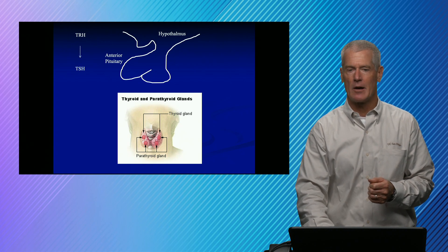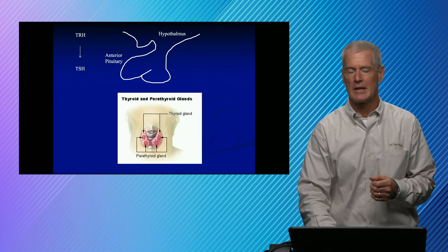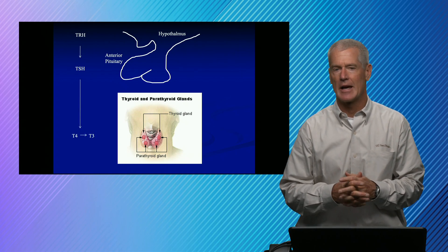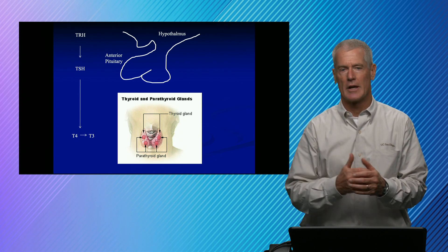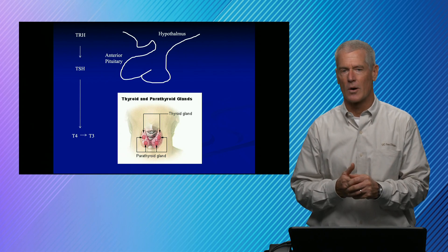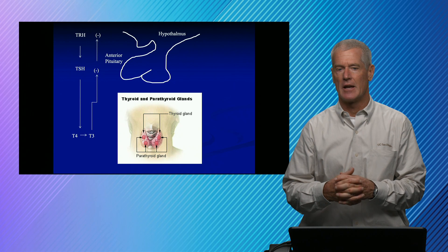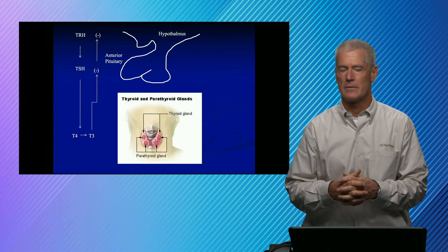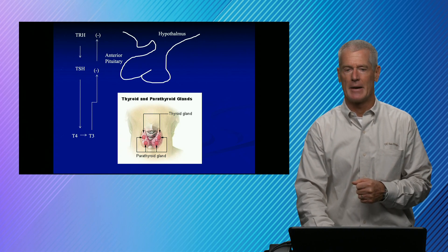TRH from the hypothalamus acts on the anterior pituitary, which causes it to release thyroid-stimulating hormone — a dimer, a glycoprotein. It acts on receptors in the thyroid gland, primarily releasing T4, a little bit of T3 as well. T4 gets deiodinated, losing an iodine, forming T3, which is the most active form of thyroid hormone, and it serves as a negative feedback loop shutting down TSH and TRH. That's how it's supposed to work — a nice feedback loop to keep things in balance.